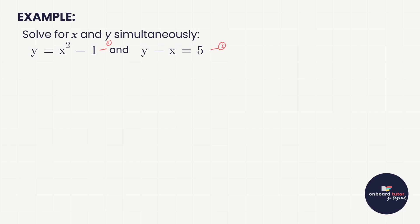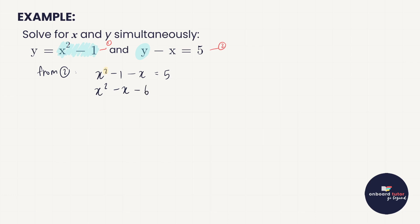We've got a couple of options here, but what I notice is that in equation one, y is already on its own. Although there's a squared here and it might be considered more complex, I usually just ask myself which variable can I most quickly get on its own. Since this is already the case, I'm going to take this y, which equals x squared minus one, and everywhere I see a y in equation two I'm going to substitute it with x squared minus one. So from equation two we're going to have: instead of y, x squared minus one minus x equals five.